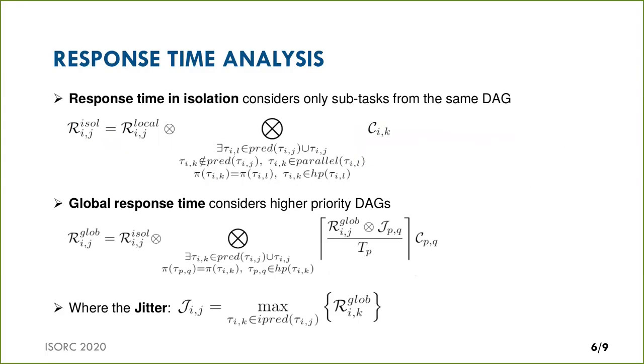Second, we compute the response time in isolation, considering only subtasks from the same graph and neglecting higher priority DAG tasks. To obtain the response time in isolation, we add to the local response time the effect of parallel subtasks that are not predecessors. Finally, we compute iteratively the effect of higher priority DAG tasks to obtain the global response time.